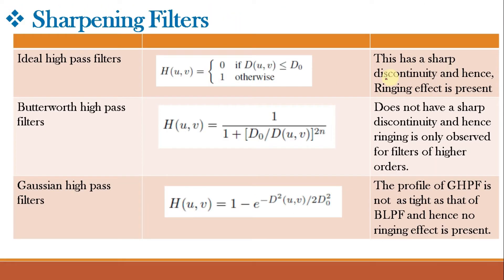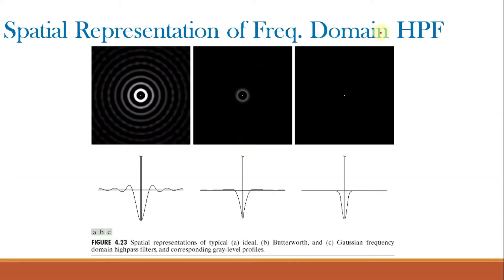The ideal high pass filter has a sharp discontinuity and hence ringing effect is present. For Butterworth, there are no sharp discontinuities so ringing is only observed for filters of higher orders. For Gaussian high pass filters, the profile is not tight and hence no ringing effect is present. The spatial representation of frequency domain high pass filters shows ideal, Butterworth, and Gaussian filters along with their corresponding gray level profiles, where rings from concentric components are visible for ideal and Butterworth but not for Gaussian.